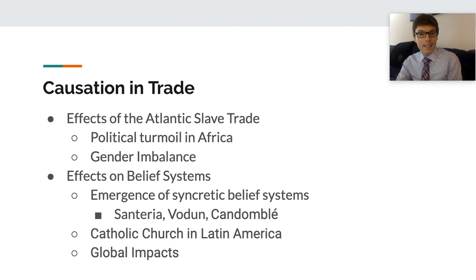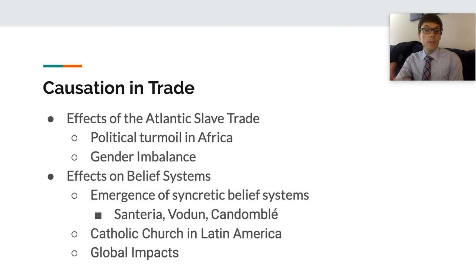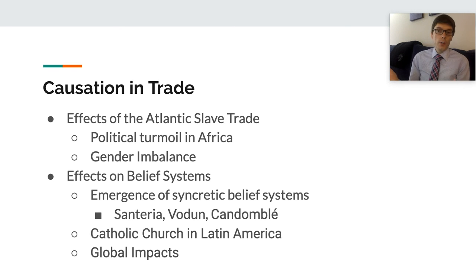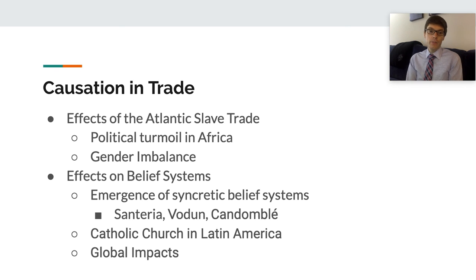Enslaved Africans in what would become the United States laid the roots of the African-American church — a hybrid of Christianity and African spiritual traditions that remains one of the most stable and oldest institutions in African-American communities. About one in ten enslaved Africans practiced Islam, and enslaved Africans really became the first significant presence of Islam in the Americas.